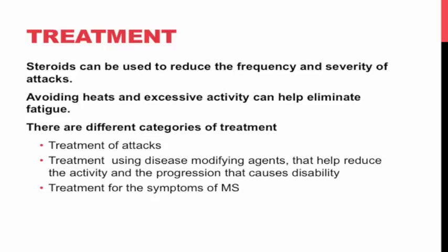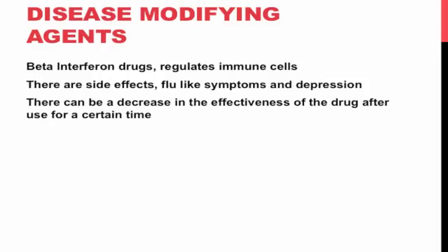The most common disease-modifying agent for MS is beta interferon drugs, which regulate immune cells and suppress the inflammatory reactions of the disease. These drugs develop antibodies that decrease the frequency and severity of relapses by almost one third. In a large-scale European trial, the number of new or enlarging lesions was also decreased by beta interferon. This was extended in observations of patients with secondary progressive MS, in which the progression of the disease was delayed by 9 to 12 months.